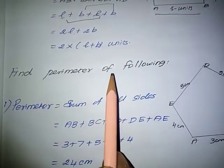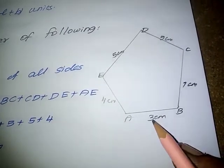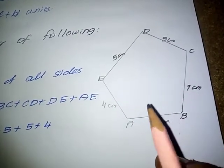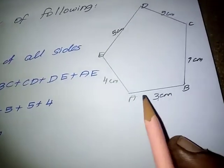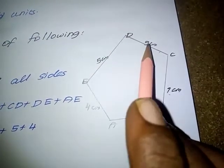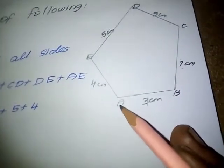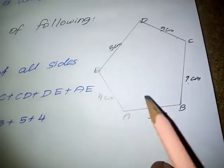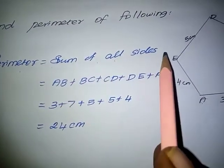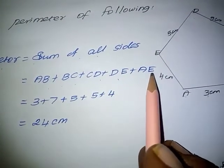Now, find the perimeter of the following closed shapes. The given figure has 5 sides, so it is an irregular 5-sided shape. AB is 3 cm, BC is 7 cm, CD is 5 cm, DE is 5 cm, and AE is 4 cm. We have to find the perimeter of the given figure. Perimeter equals the sum of all sides: AB plus BC plus CD plus DE plus AE.